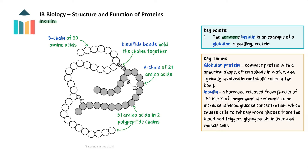Insulin is a hormone, a type of signalling protein, with a well-defined tertiary structure. It is secreted by beta cells in the pancreas to help control blood glucose concentration. It is a small protein composed of 51 amino acids in humans. The amino acids are organised into two peptide chains — the A chain of 21 amino acids and the B chain of 30 amino acids. The two chains are connected by disulfide bonds that help stabilise the protein structure. Its specific structure means it can bind to specific receptors on the surface of target cells, signalling them to take up glucose.